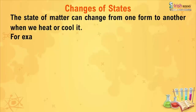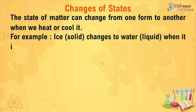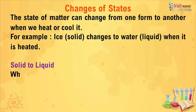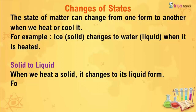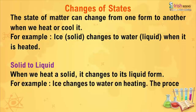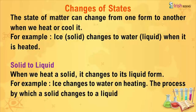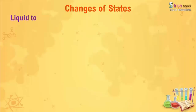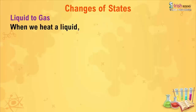The state of matter can change from one form to another when we heat or cool it. For example, ice, a solid, changes to water, a liquid, when it is heated. When we heat a solid, it changes to its liquid form. The process by which a solid changes to a liquid is called melting.